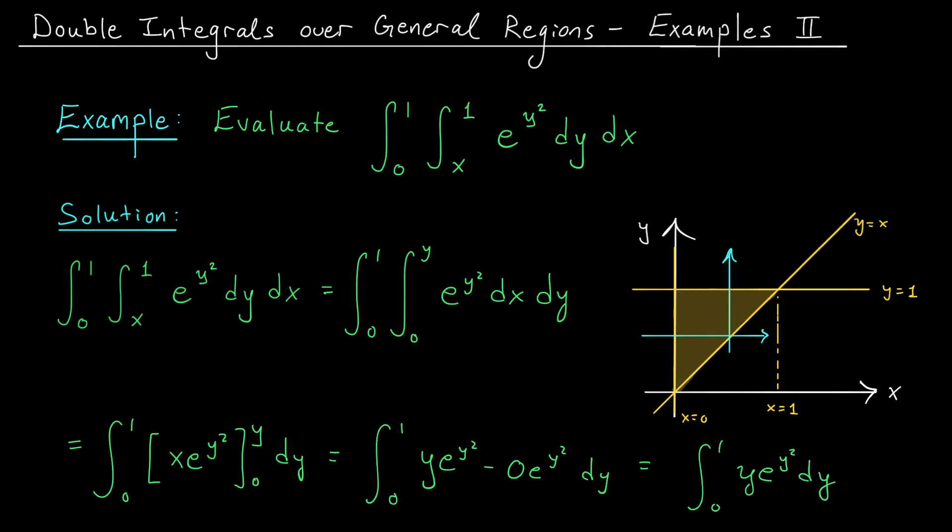Oh, and now check it out, folks. A small miracle has occurred. Before, we weren't able to find an antiderivative for e to the y squared with respect to y. Now, by switching the order, we've introduced an extra y term here. This is going to make all the difference. With this extra y term, we can now use the substitution rule to evaluate this integral. Let's give it a try.